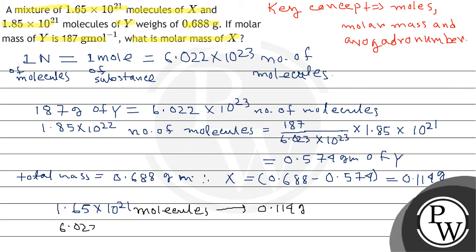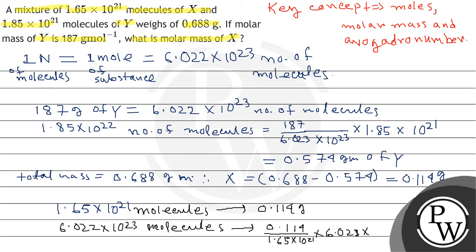तो इस तरीके से, 6.022×10²³ molecules का weight कितना होगा: 0.114 divided by 1.65×10²¹ into 6.022×10²³। इस तरीके से हमारा answer जो आ जाएगा वो है 41.6 gram। क्योंकि एक mole में 6.022×10²³ molecules होता है, इसलिए उसका weight ही होगा हमारा molar mass of X।